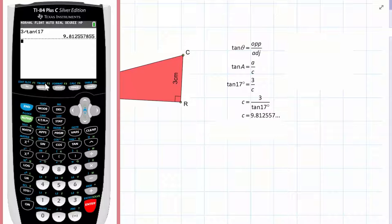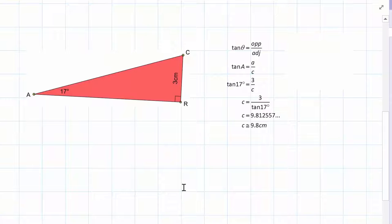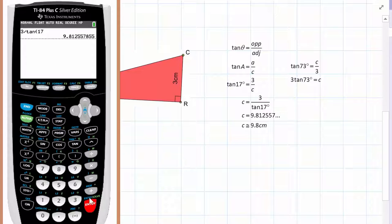Of course, you might also have noticed here that since angle A is 17 degrees, it's quite easy to get angle C as 73 degrees so that the whole triangle has a sum of 180 degrees. In that case, you could have said that the tangent from angle C, which is 73 degrees, would be equal to little c over 3, and therefore 3 times tan 73 degrees is equal to C, getting surprise surprise, the exact same result.